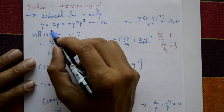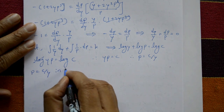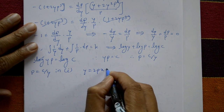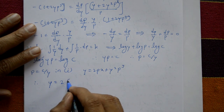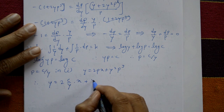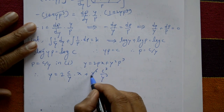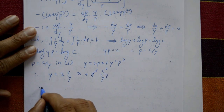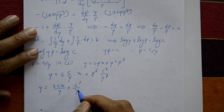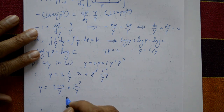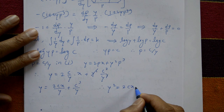From yp = c, we get p = c/y. Now substitute p = c/y into equation one: y = 2px + y²p³, giving y = 2(c/y)x + y²(c/y)³. Simplify: y = 2cx/y + c³/y. Multiply both sides by y: y² = 2cx + c³. This is the required general solution.